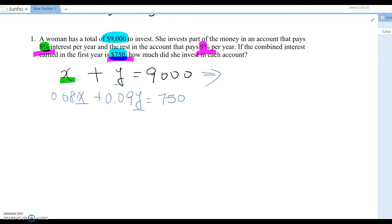And in this case, up to me, I will solve for Y. So Y become 9,000 minus X.